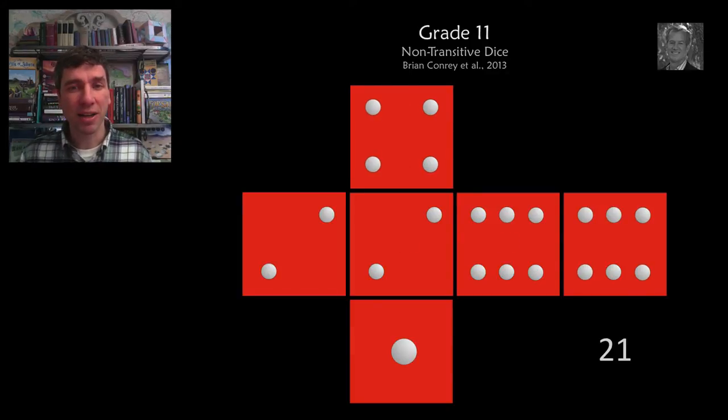for example this dice here, if you take three of those dice randomly chosen, what is the probability